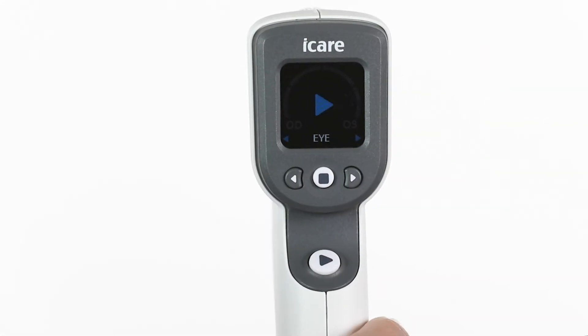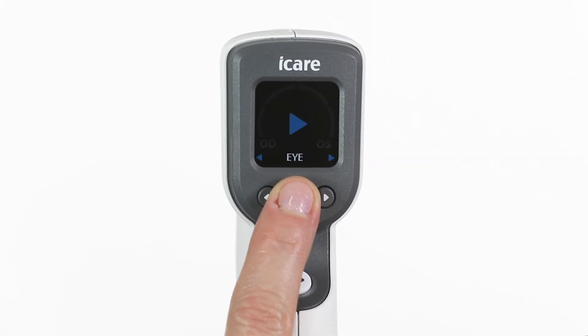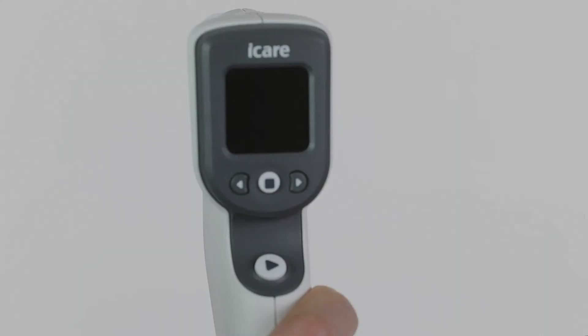When turning off the tonometer, press and hold the select button for 3 seconds, or the device will turn off automatically in 3 minutes if not used. Please refer to the manual for additional information.